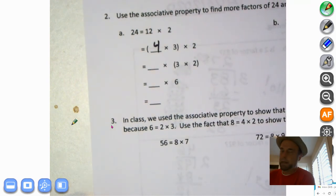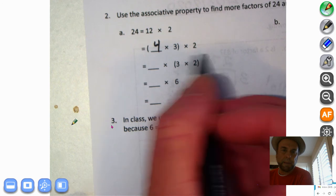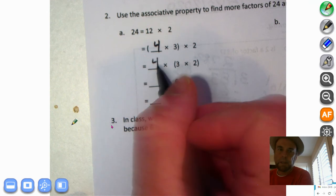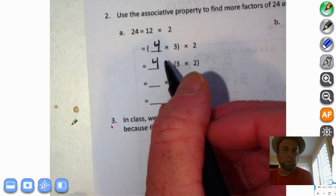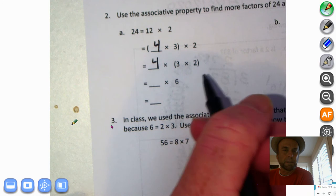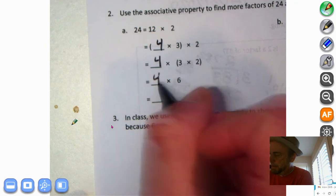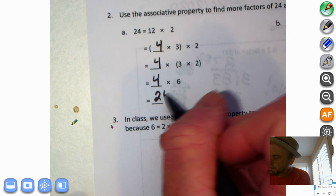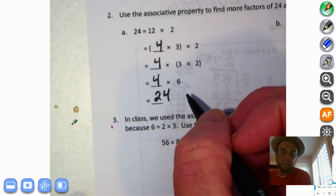So we're just going to turn this 12 into a parenthetical multiplication equation. So what times 3 equals 12? 4. 4 times 3 equals 12. All right, then we're going to move the parentheses to include the 3 and the 2. And our 4 will just drop down. So this also equals 4 times 3 times 2. So 3 times 2 is 6. We'll bring our 4 down. 4 times 6 equals 24.